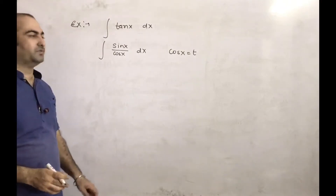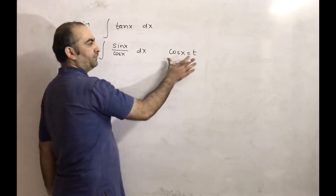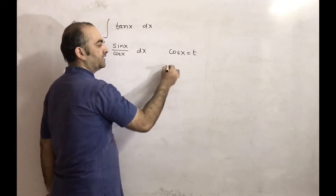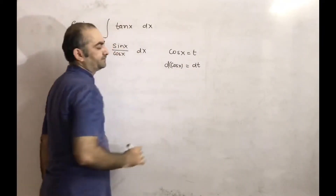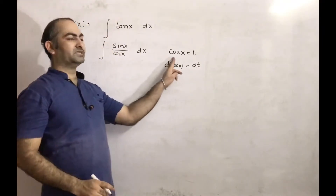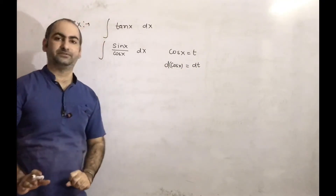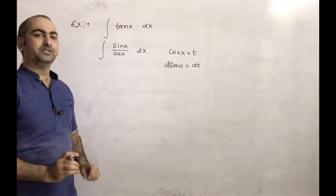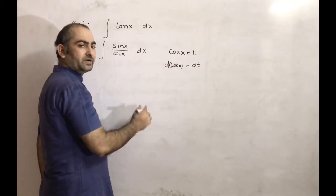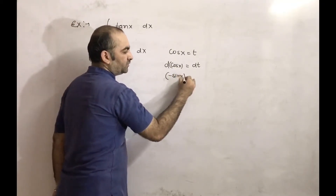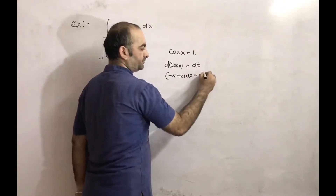First, we differentiate with respect to x. We can write d of cos x equal to dt directly. In integration, whenever we are doing substitution we can write it directly. So, differentiating cos x gives minus sin x into dx, and this equals dt.